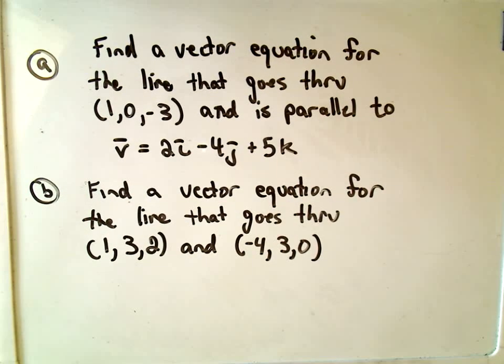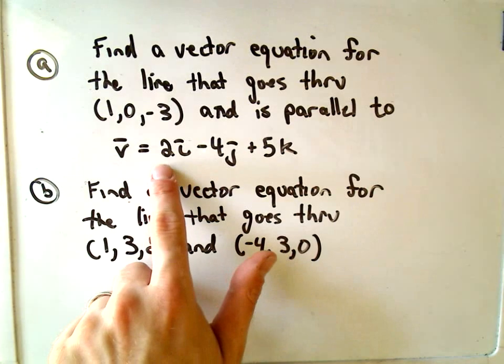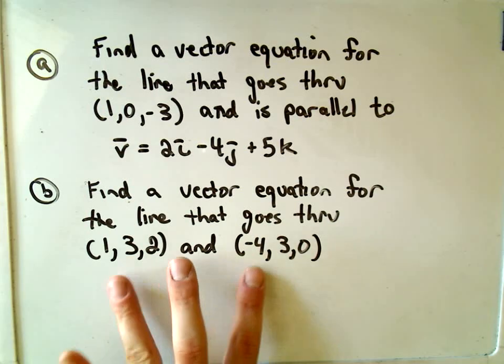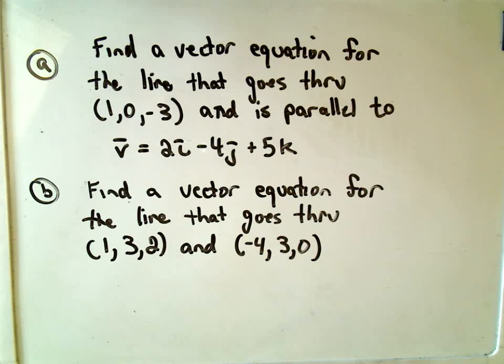But okay, so let's do two problems here. We're going to find a vector equation for the line that goes through this point (1, 0, -3) and it's parallel to the vector 2i - 4j + 5k. And then we're just going to find a vector equation for a line that goes through two points. So two problems, neither of which I think are going to be hopefully too terribly miserable.